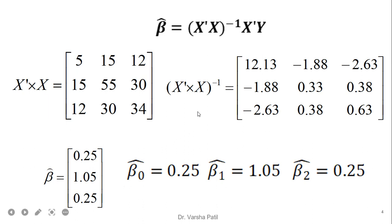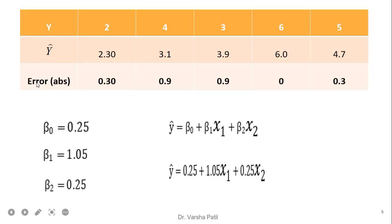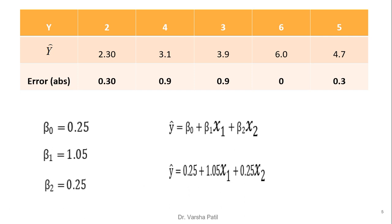One concern is that it is very difficult in an exam to calculate the inverse of the matrix. For this problem the error is calculated — specifically the simple absolute error. We can also calculate mean square error and mean absolute error, but here only the simple error is used. The predicted parameters are beta 0 equals 0.25, beta 1 equals 1.05, and beta 2 equals 0.25. Substituting the values of x1 and x2 gives the predicted y-cap, and we can find the error between actual and predicted values.